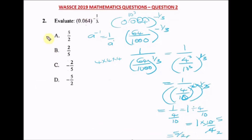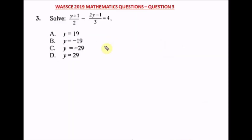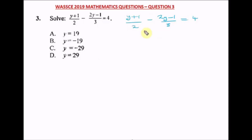Question three of the WAEC 2019 mathematics past question. Solve: (y + 1)/2 minus (2y − 1)/3 equals 4. This is algebraic fractions. The LCM of 2 and 3 is 6. Two goes into 6 three times, so 3 multiplies (y + 1). Three goes into 6 two times, so 2 multiplies (2y − 1). We take 6 up on the right side, giving 6 times 4 equals 24.